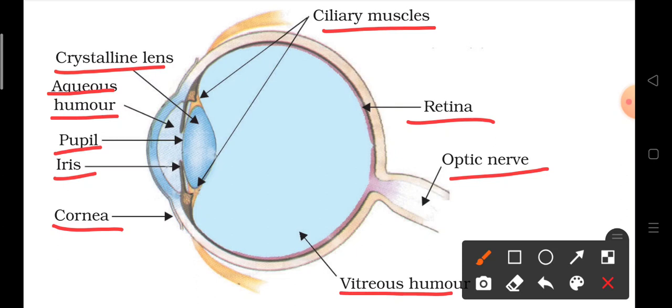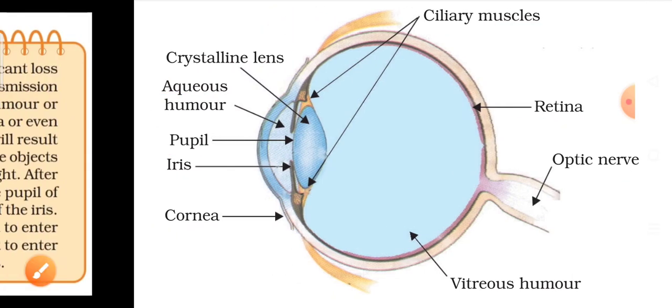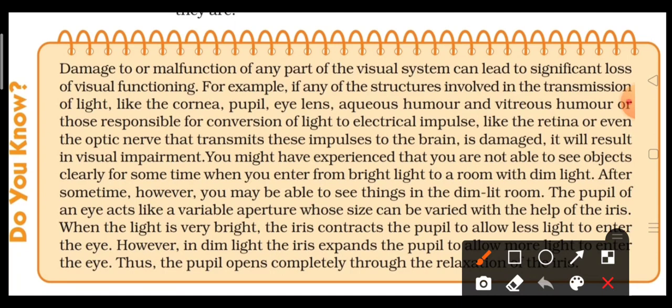If any of these is defective, then your visual system will get affected — it may get partially or completely affected. You might have experienced that you are not able to see objects clearly for some time when you enter from bright light to a room with dim light.